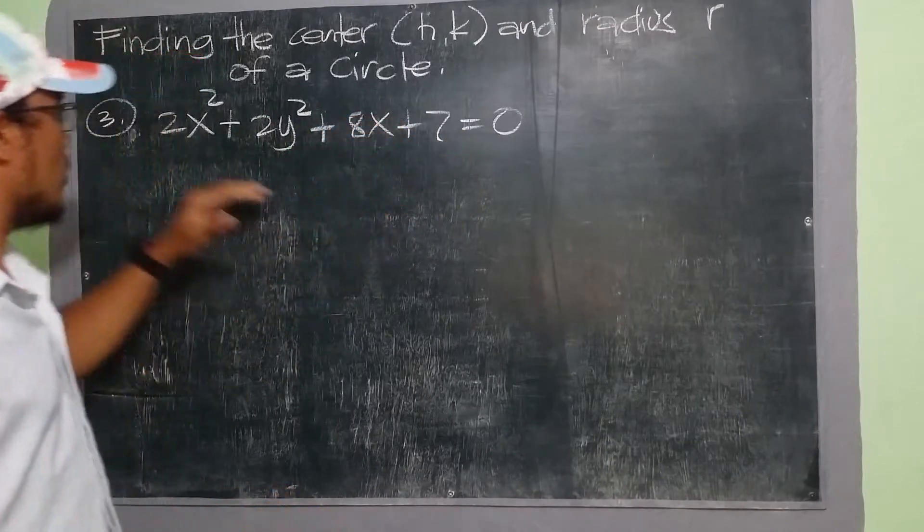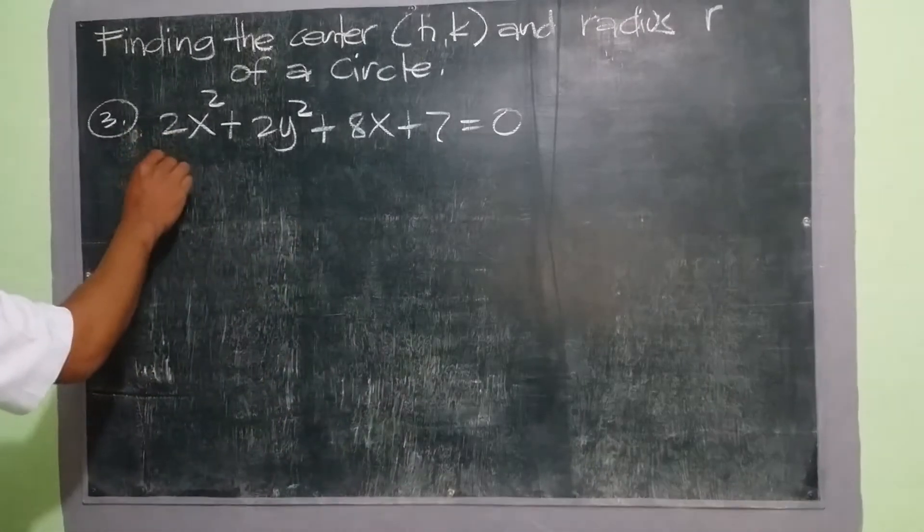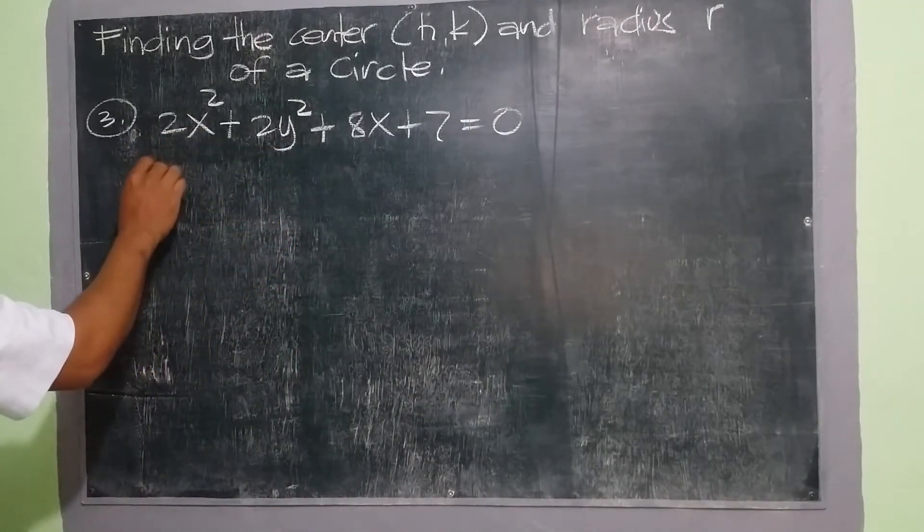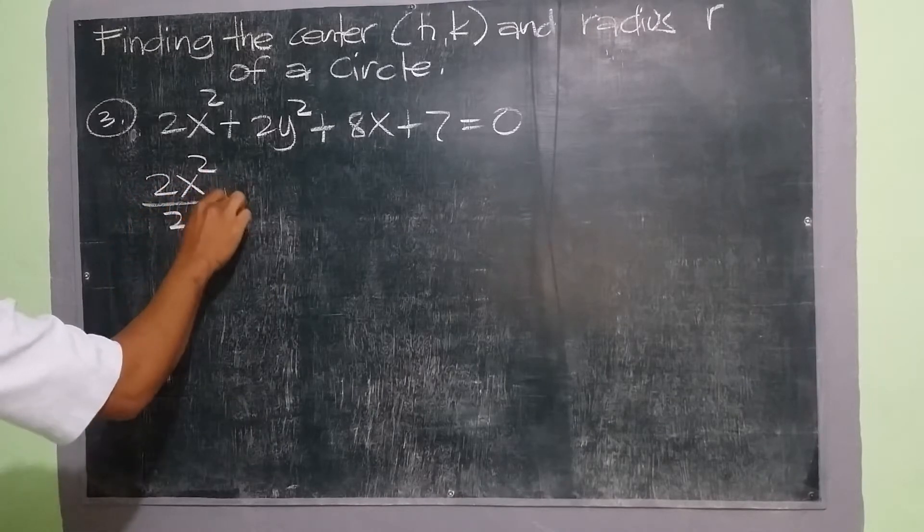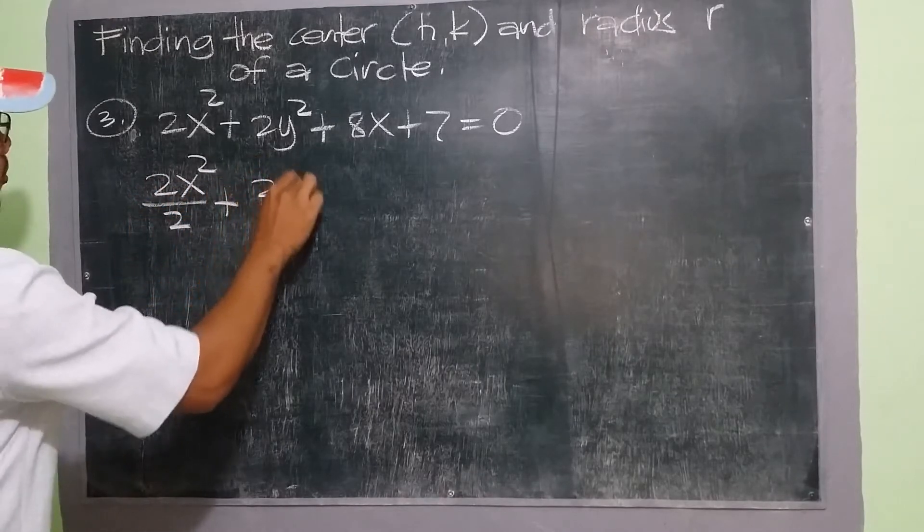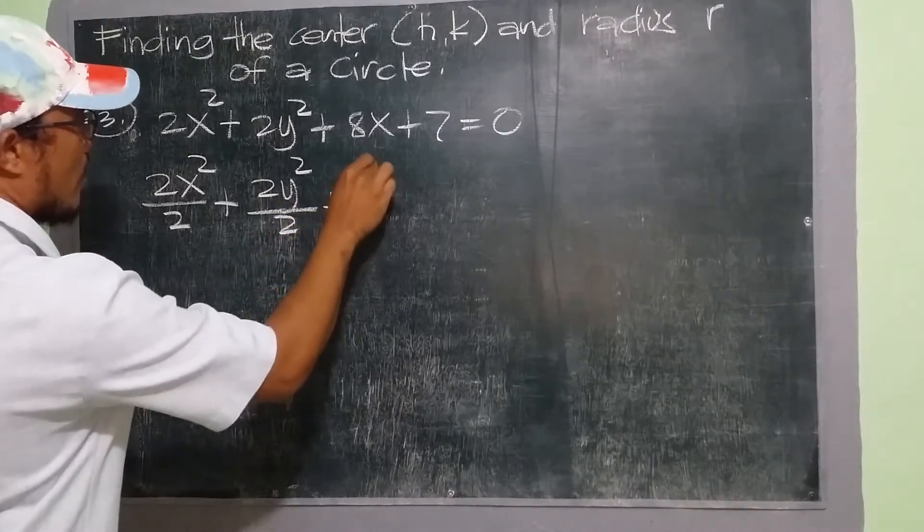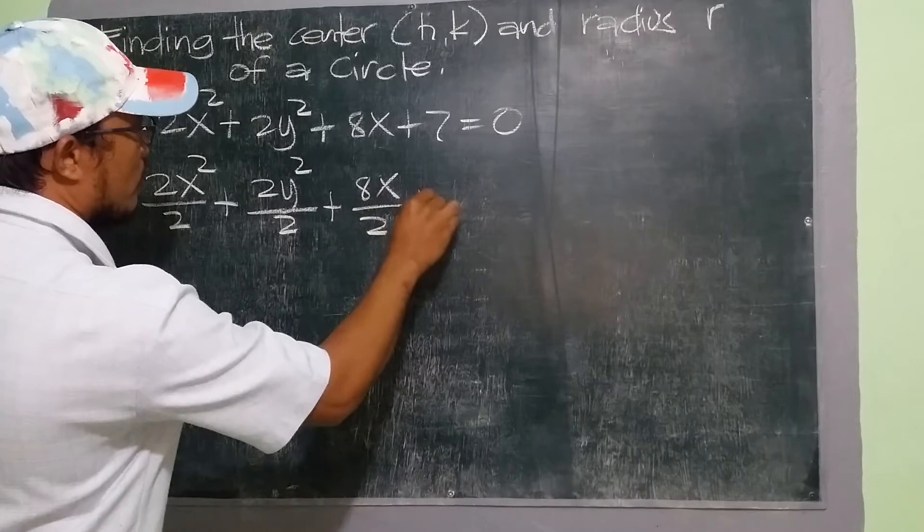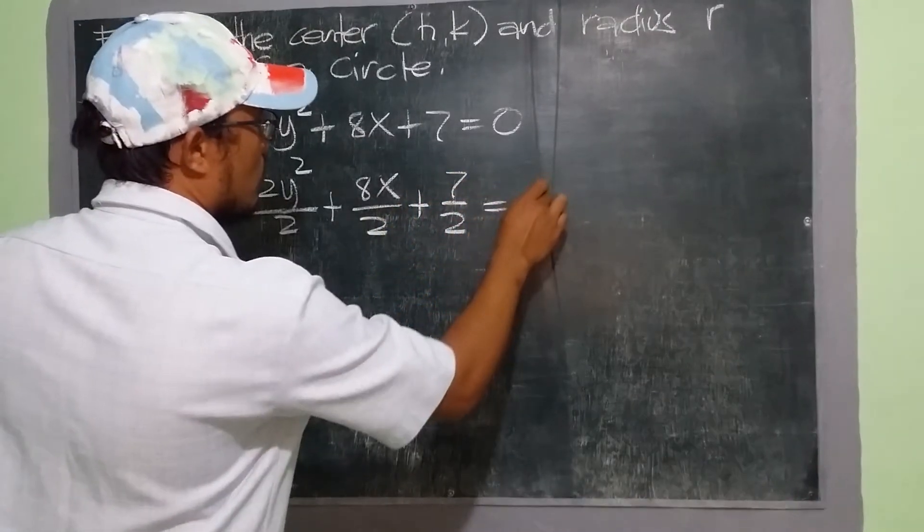So what we're going to do is we divide all terms by 2 to make it simple. So we have 2x squared will be divided by 2, 2y squared will also be divided by 2, 8x will also be divided by 2, so we have 7, we can also be divided by 2, equal to 0.